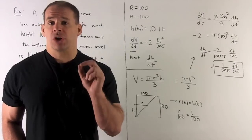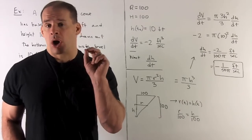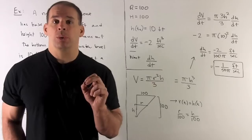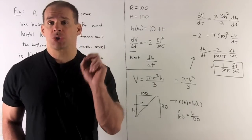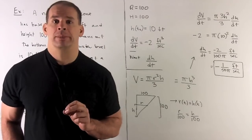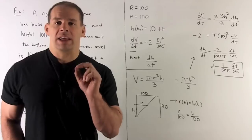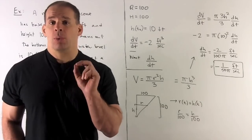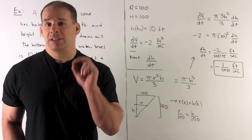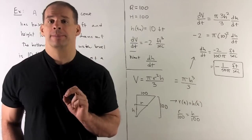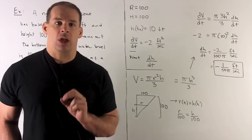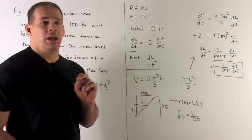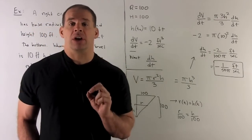So, for a right circular cone, our equation is going to be V equal to π/3 R squared times H. Now, if you note, we're not given R in this equation, so we're going to have to figure out how to get that to come into play. So, let's take a look.